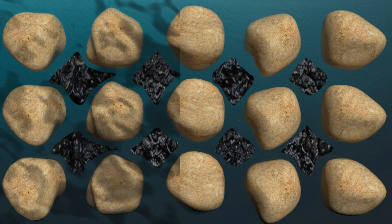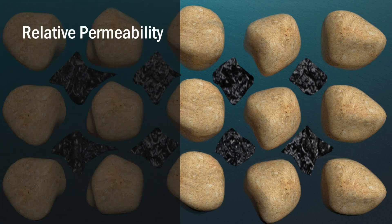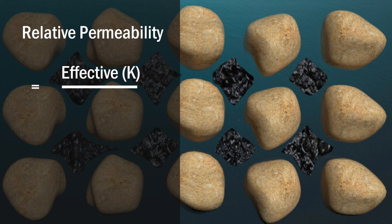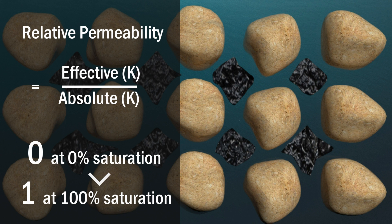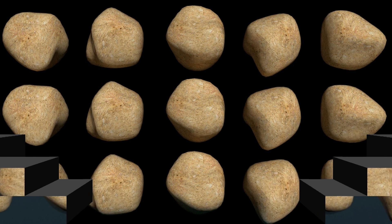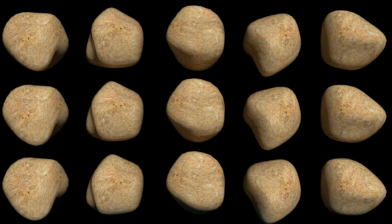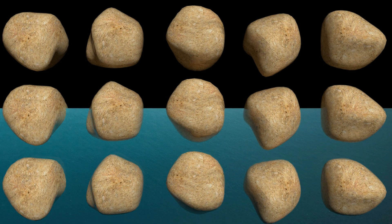Relative permeability is the ratio of the effective permeability of a fluid at a specific saturation to the absolute permeability of the same fluid at one hundred percent saturation. It varies from zero at zero percent of the fluid saturation to one at one hundred percent of its saturation. In conclusion, absolute permeability is a property of the rock which is only dependent on the type of rock and its properties.